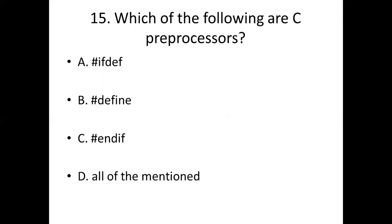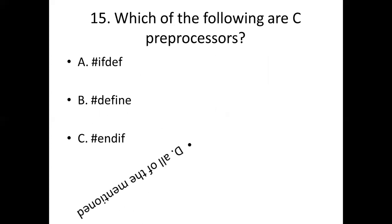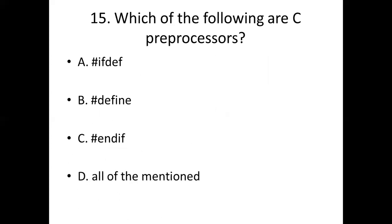Fifteenth bit. Which of the following are C preprocessors? Option A: #ifdef. Option B: #define. Option C: #endif. Option D: all of the mentioned. Answer: Option D, all of the mentioned.